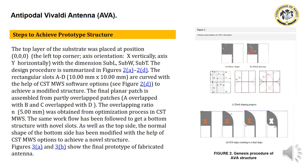Step to Achieve Prototype Structure. The top layer of the substrate was placed at position with the left top corner as axis orientation: X as the vertical axis, Y as the horizontal axis, with dimensions sub-L, sub-W, and sub-T. The design procedure is summarized in Figures 2A and 2D.